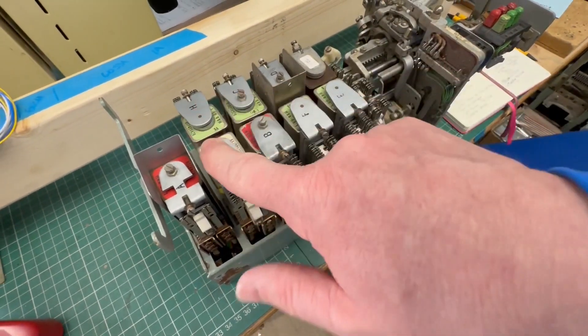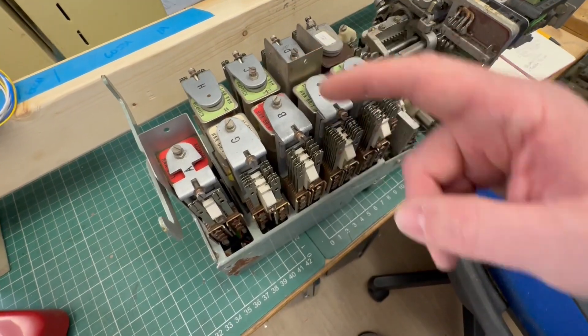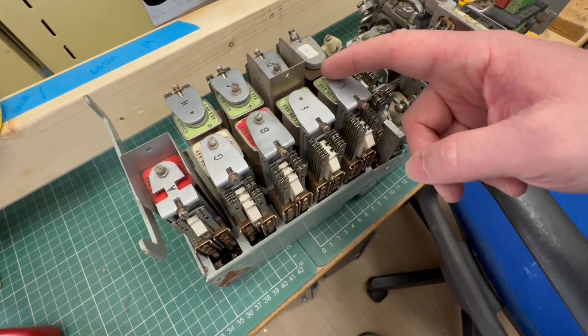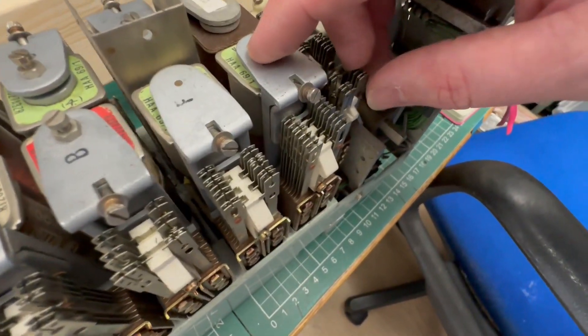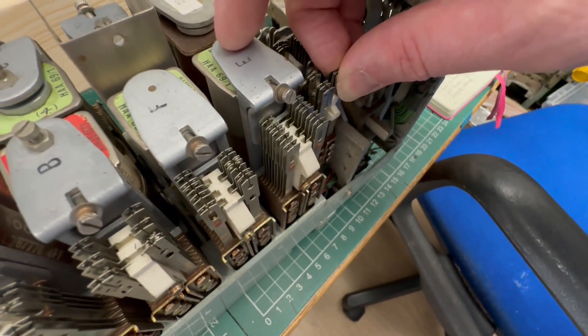These here are relays. So you have a large electromagnet that attracts this armature that operates a set of spring contacts.